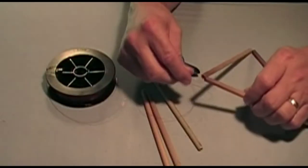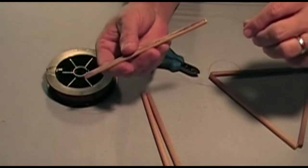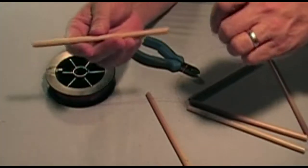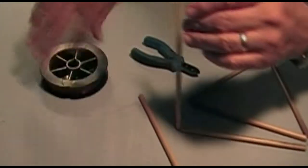We now start a second face of this tetrahedron. We thread into one edge of the assembled triangle, then add two more edges to complete a second triangle.